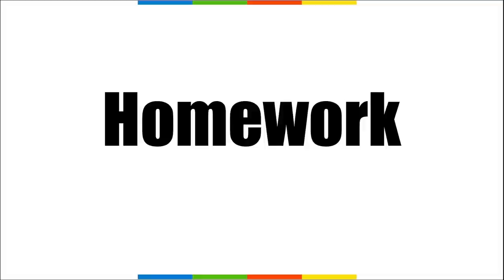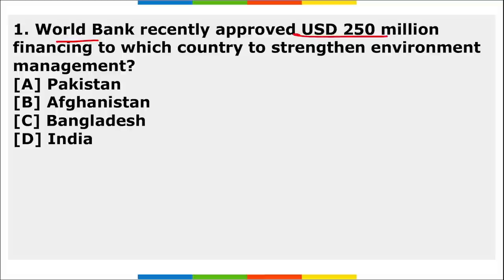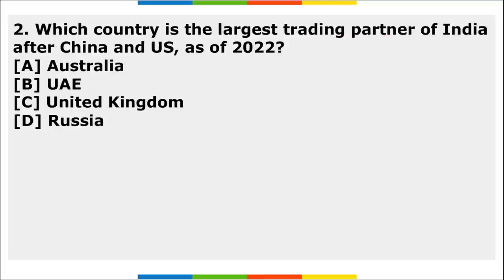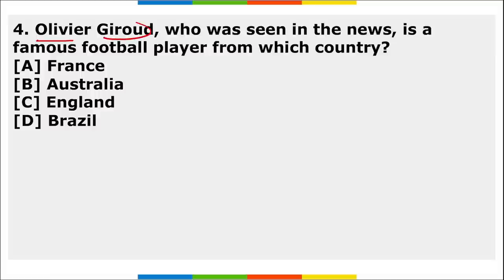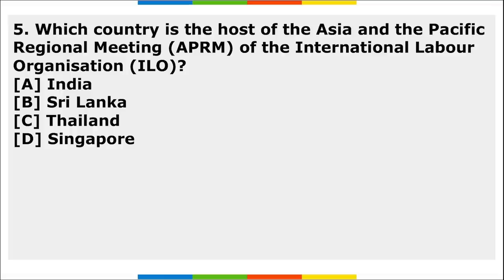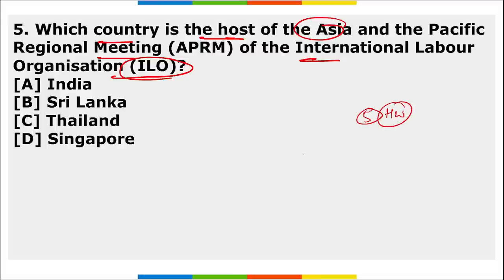Homework questions: (1) World Bank recently approved 250 million dollar financing to which country to strengthen environment management? (2) Which country is India's largest trading partner after China and the US as of 2022? (3) Which country abolished morality police known as the Gasht-e-Ershad or Guidance Patrol? (4) Olivier Giroud, seen in the news, is a famous football player from which country? (5) Which country is hosting the Asia-Pacific Regional Meet of the International Labour Organization? Please answer these questions in the comments.